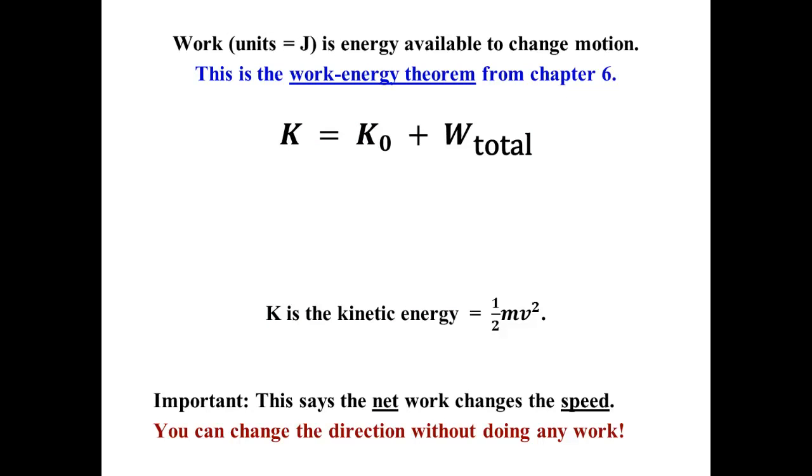Work is energy available to change motion. It has units of joules, and that relationship is described by what's called the work-energy theorem, which is in Chapter 6. It says the final kinetic energy K is equal to the initial kinetic energy plus the total work done by all forces acting on a particular body.